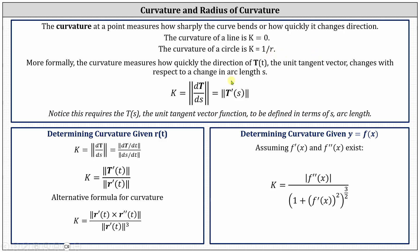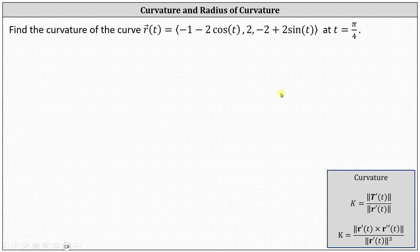Sometimes we're also asked to determine the radius of curvature, which equals the reciprocal of the curvature, or one divided by the curvature. Going back to our example, let's first determine the curvature using the formula: curvature equals the magnitude of T prime of t divided by the magnitude of r prime of t.